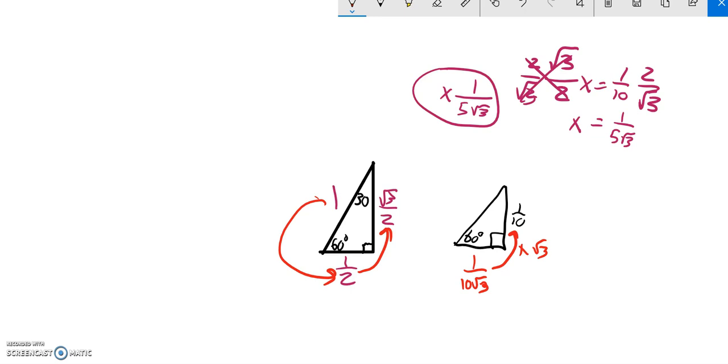I'm dividing it. I'm undoing the multiplying. And since this is half of that, I could double it to go this way. And if I double that, I get 2 over 10 root 3. The 2/10 reduced to 1/5 root 3. 1 over 5 root 3.